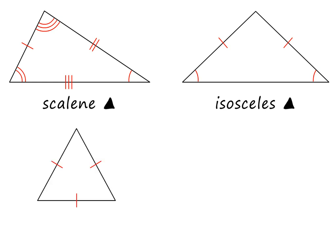Do you remember the name of the triangle with three equal sides? It is an equilateral triangle. This triangle also has three equal angles, and because the angles of a triangle always add up to 180 degrees, each angle is 60 degrees.